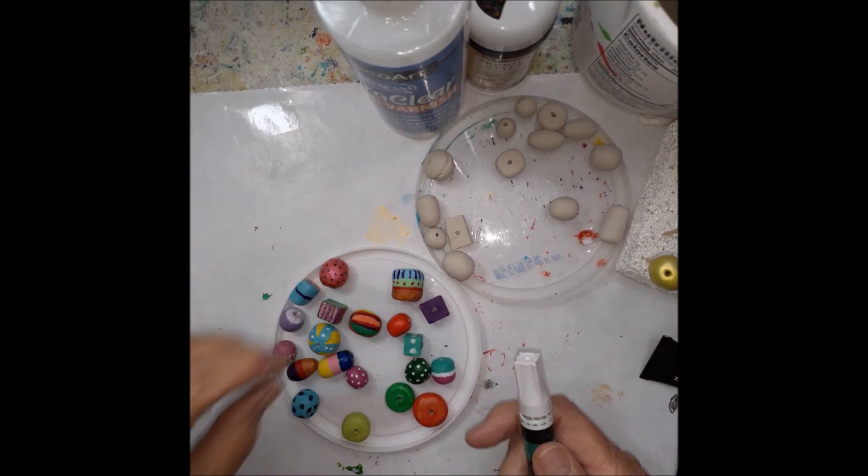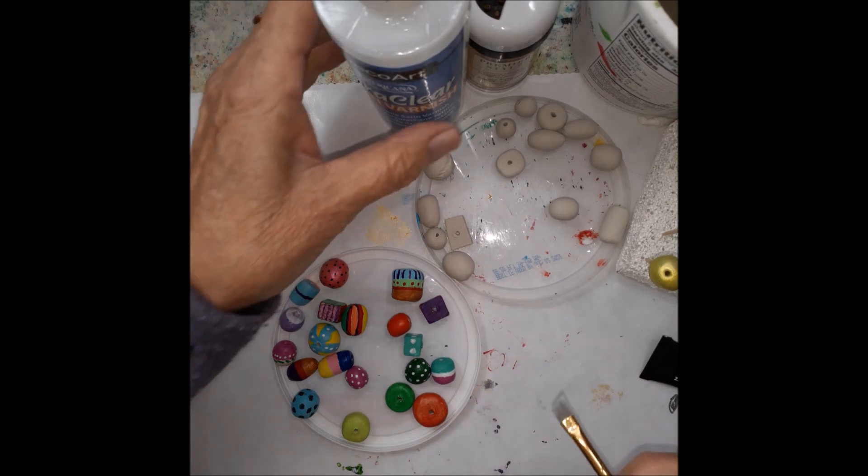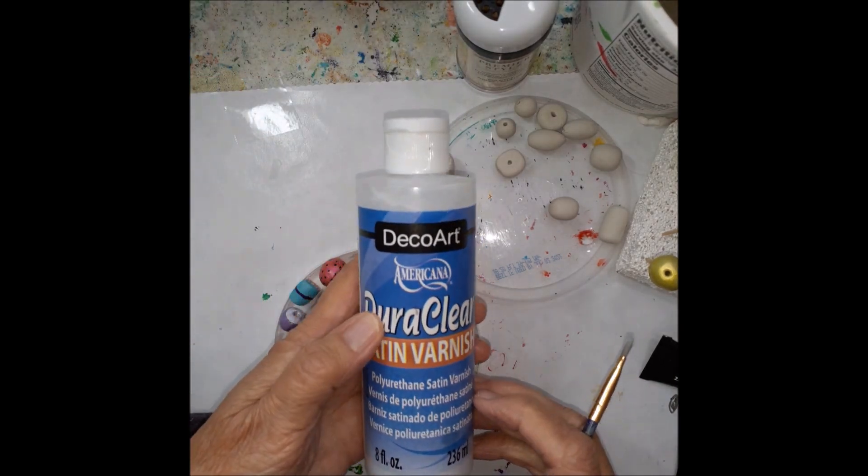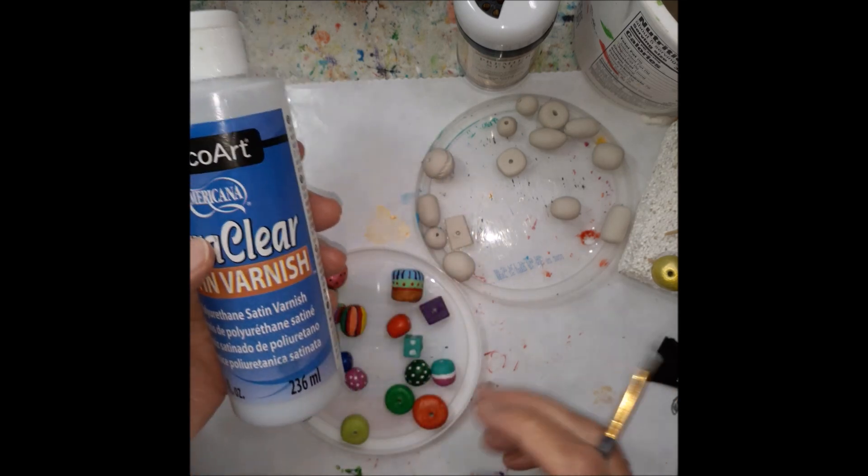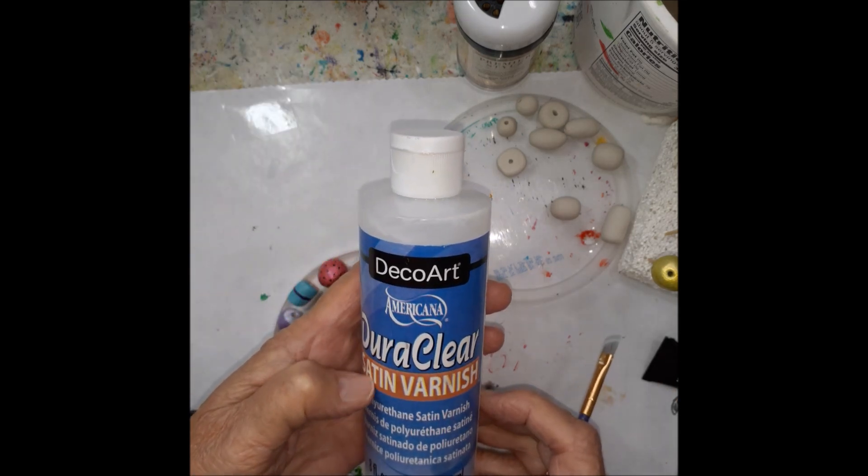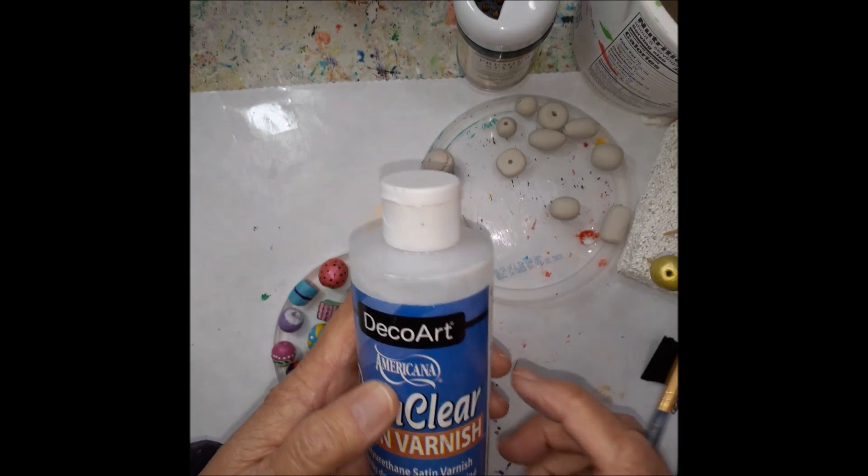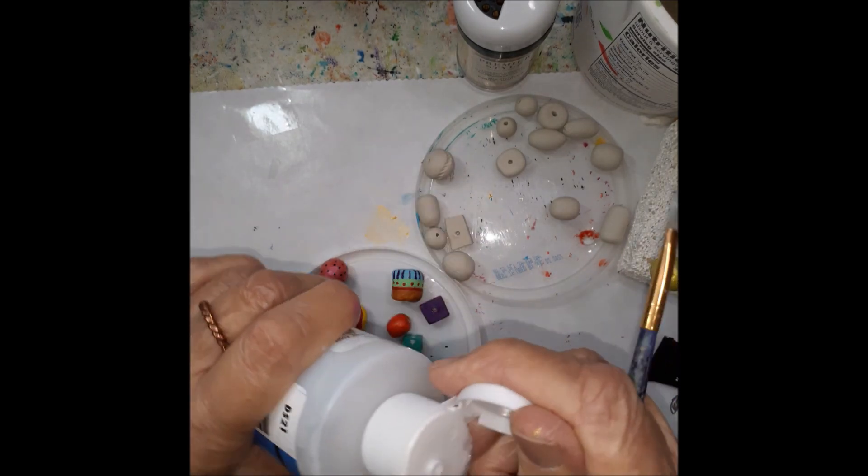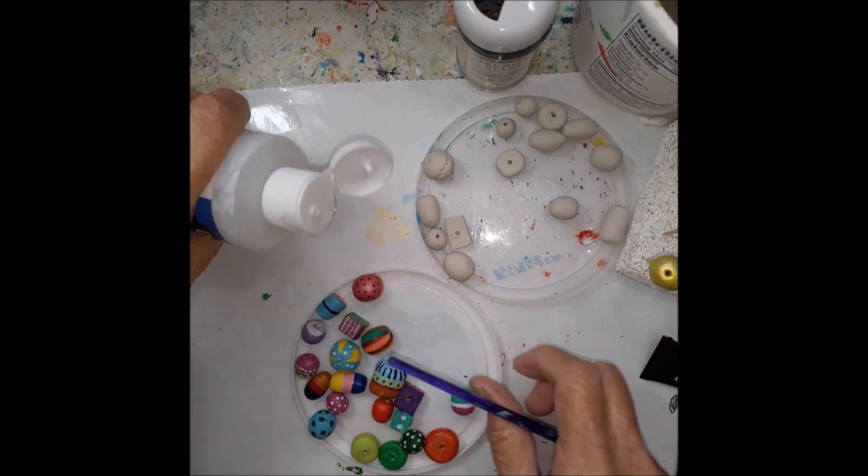I'll show you real quick. I used DuraClear satin varnish just to get it a little sheen. It's a polyurethane satin varnish from Americana DecoArt. I really like this. It dries quickly.